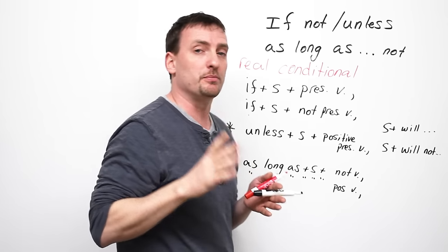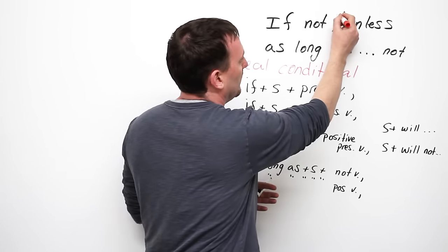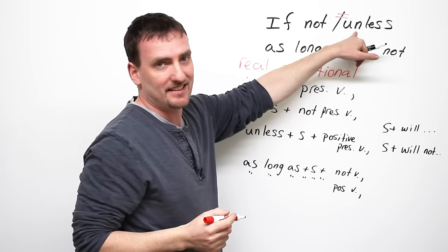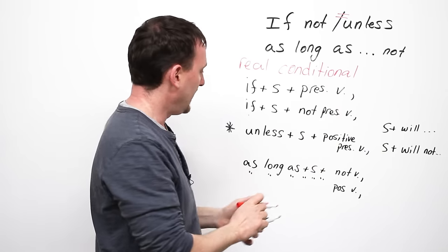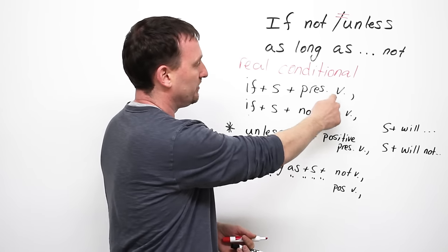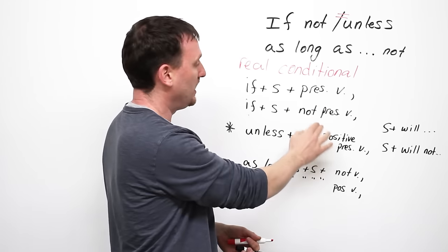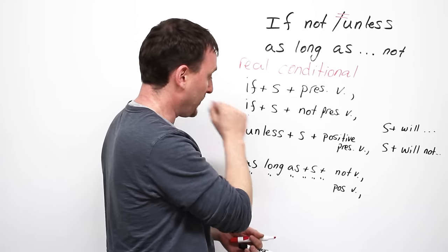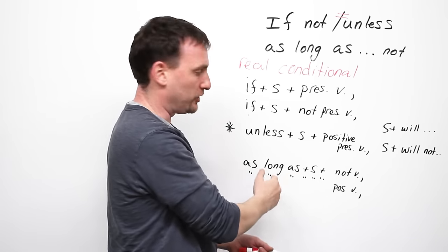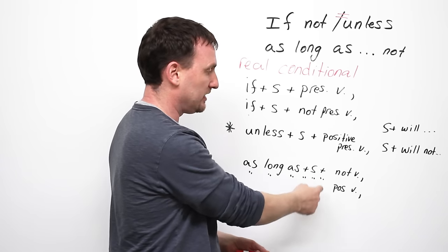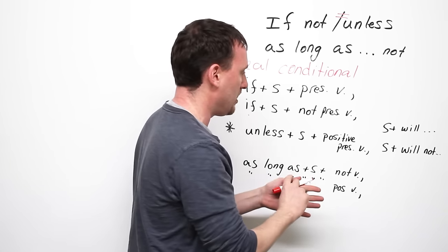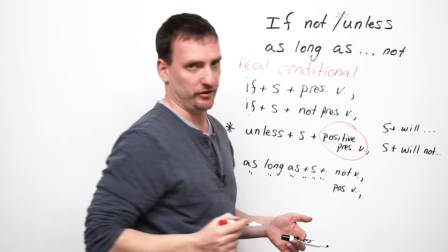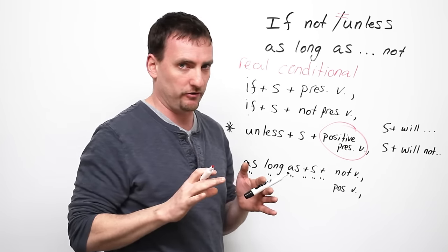Now, the most important thing to remember is that unless basically means if not. And you'll notice here I have a positive verb. I have a negative verb. We're also going to look at as long as or as long as not. Positive and negative. With unless, you're only going to use a positive verb. That's very important to remember.